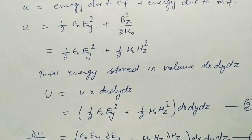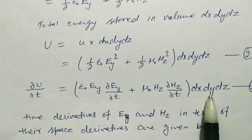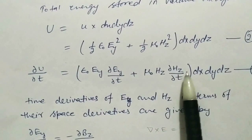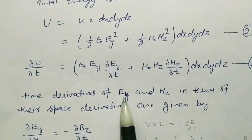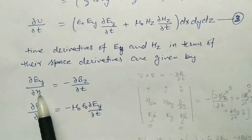Now, differentiating with respect to time, because we have to find the rate of change of energy — so du by dt — using simple differentiation as you have learned in mathematics. Now the time derivatives of E_y and H_z need to be changed into space derivatives. The time derivative of E_y and H_z in terms of their space derivatives: we write del B_z by del T as del E_y over del x with a negative sign.